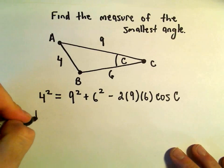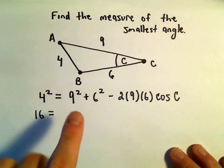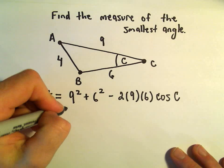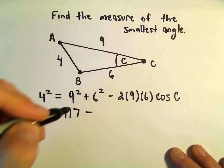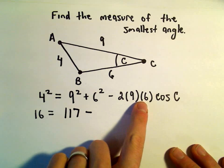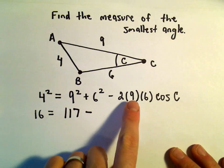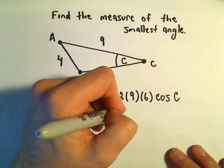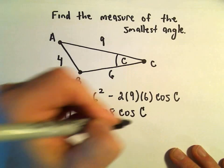Now just a little bit of arithmetic. 4² is 16, 9² is 81, and 81 plus 36 gives us 117. For 2 times 9 times 6, well 9 times 6 is 54, and if you double that you get 108, which multiplies cosine of C.